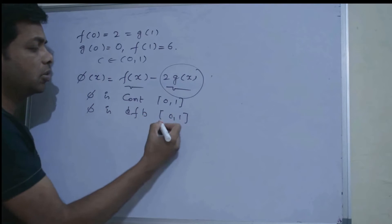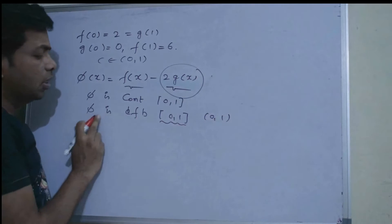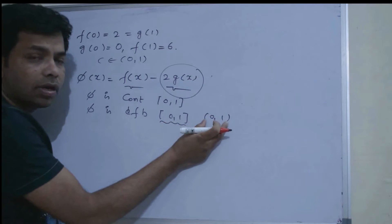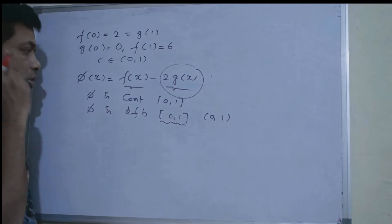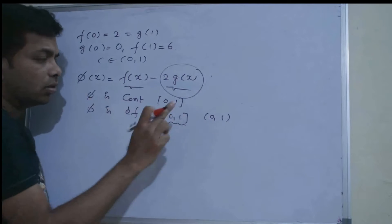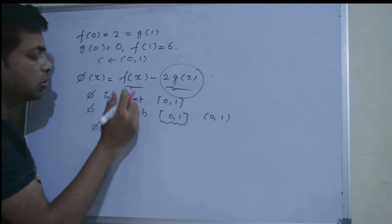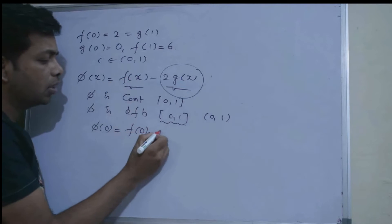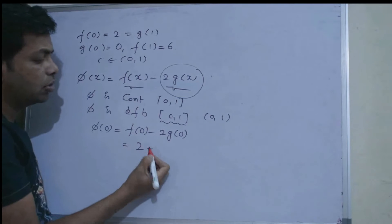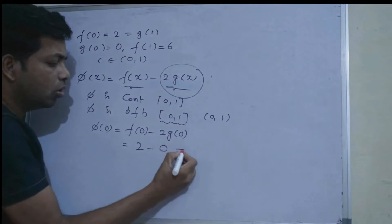So I can say φ is continuous on closed interval [0, 1] and differentiable on open interval (0, 1). Now, what is the value of φ(0)? Substituting x = 0: φ(0) = f(0) - 2g(0) = 2 - 2(0) = 2.